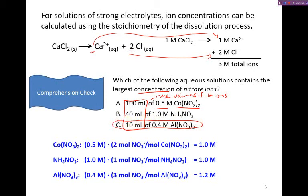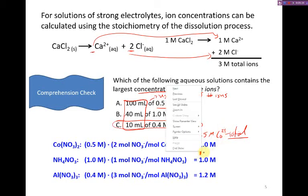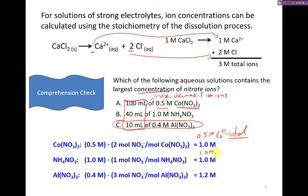If we were to ask about the total ion concentration, then we would have to account for the cations as well. And so that would be 0.5 molar cobalt, 1 molar ammonium, and 0.4 molar aluminum. And so that would be 1.5 molar total, 2.0 molar, and 1.6 molar. So notice that the one that's most concentrated depends on what we're asking about. That's where you want to pay attention to those types of scenarios.